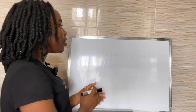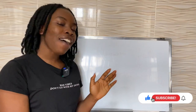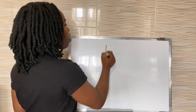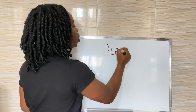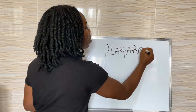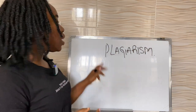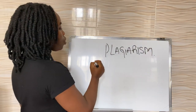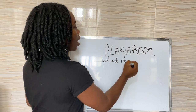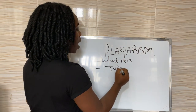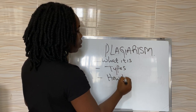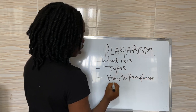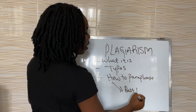So in today's video, you might be wondering why does she have a whiteboard? Yes, I have a whiteboard in my kitchen because I just want to help you get it right. So in this video, I'm going to be talking about plagiarism. I'm going to cover what it is, types of plagiarism, how to paraphrase, and best practices for paraphrasing.